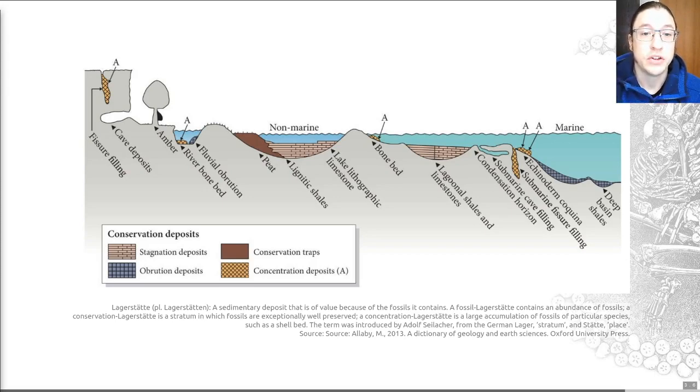Conservation Lagerstätten in fossilization are based on processes that avoid or limit scavenging and decay and diagenetic destruction. I've put an image on the slide here which shows examples of where we may have found these. And these include sedimentary regimes such as marine, so in the sea, lacustrine associated with a lake, and often sites of exceptional preservation associated with those two watery environments include stagnant and often anoxic waters that lend themselves towards exceptional preservation.